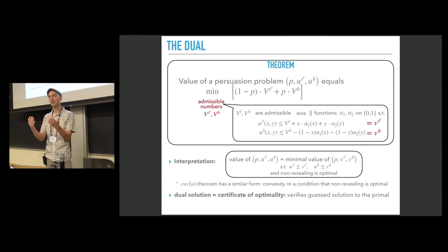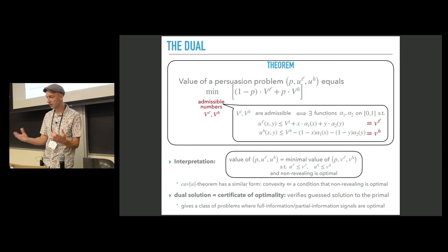Also, duality is useful because, it's a standard use, dual solution can be thought as a certificate of optimality for the primal problem. If you manage to guess a solution of the primal problem, and also you guessed a solution of the dual, but you are not sure that these are solutions, but it turns out that the objective functions are equal, then this verifies both of your guesses. So using this logic in the paper we show, we find a certain class of utility functions where revealing the whole information to one receiver and partial information to another receiver is optimal.